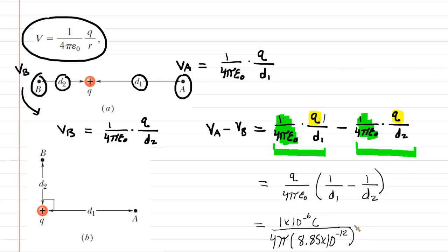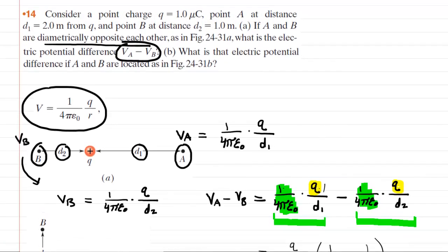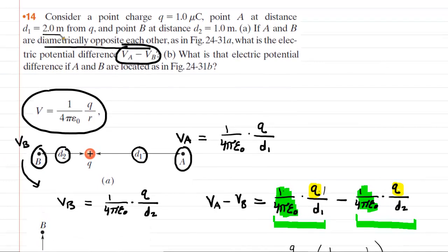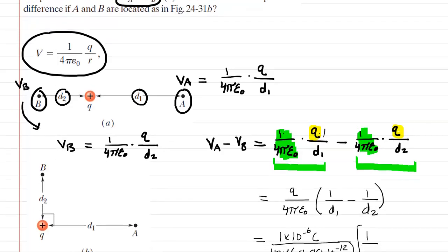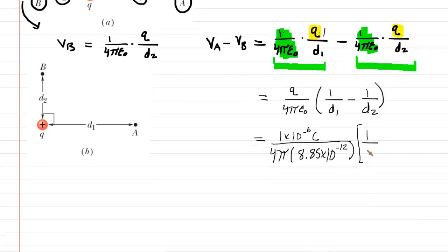And then over here, we have 1 over D1. If we scroll back up to the given information, we were told that D1 equals 2 meters, and also D2 is 1 meter. So let's keep those values in mind. So D1 would be the 2 meters, and then D2 would be the 1 meter.